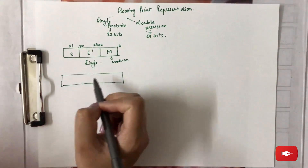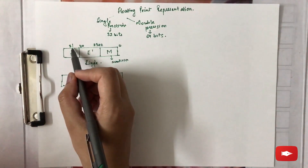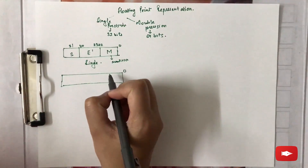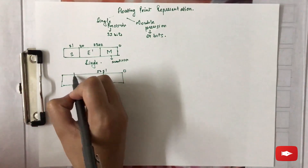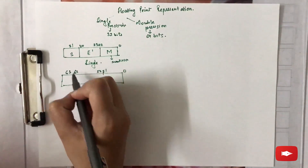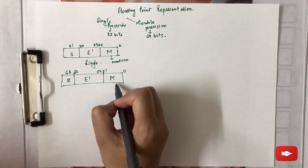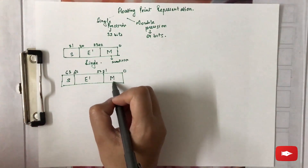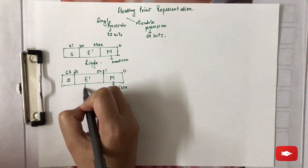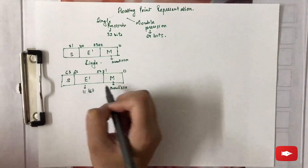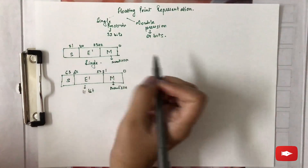Similarly, for double precision, it will be a 64-bit format. Starting from 0, it will go up to 51. In this case, there is a 52-bit mantissa, an 11-bit exponent, and again a single bit for sign.